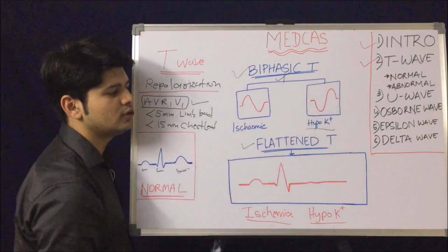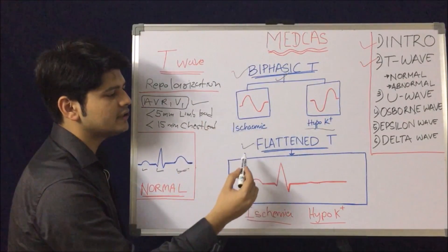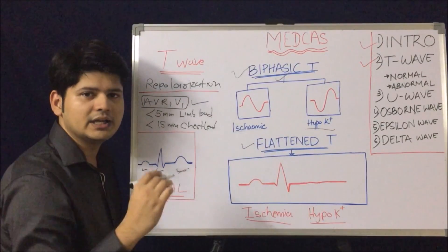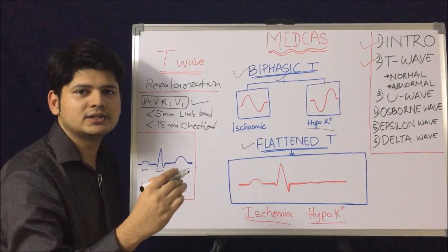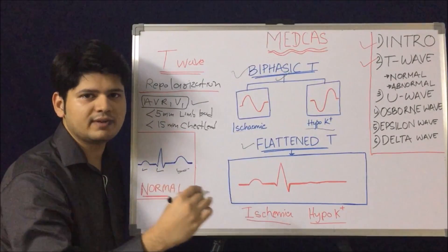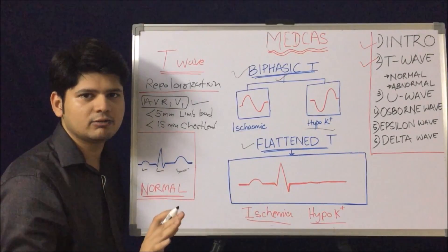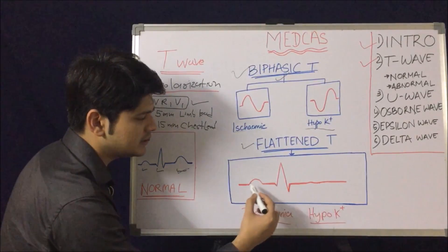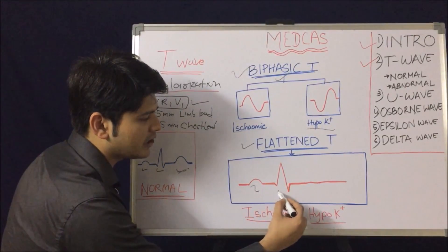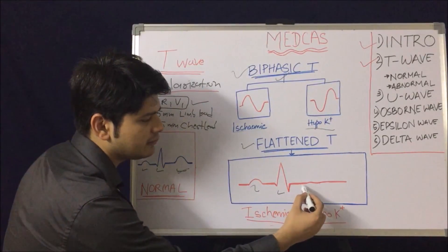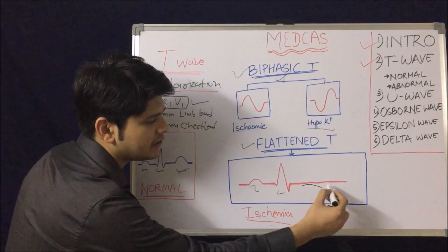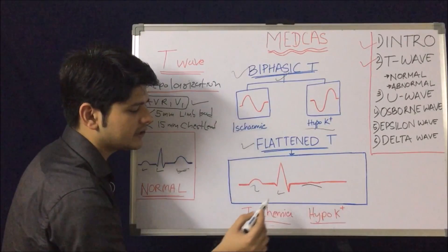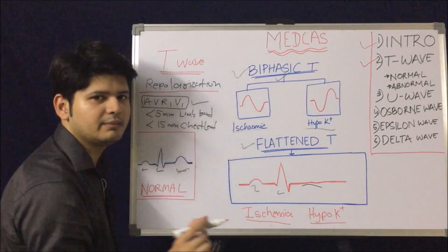Now let's understand the flattened T wave. A flattened T wave means the normally upright T wave becomes flattened. Here you can see the P wave, QRS, and then an almost flattened T wave. Flattened T waves are seen in two cases: ischemia and hypokalemia.